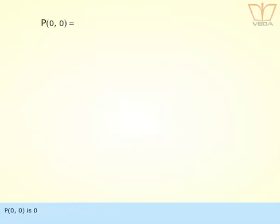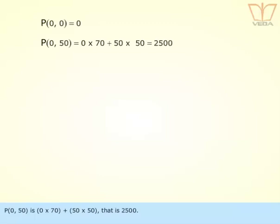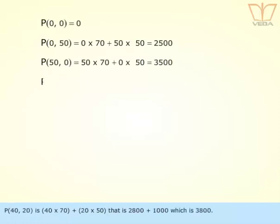P at (0, 0) is 0. P at (0, 50) is 0 times 70 plus 50 times 50, that is 2,500. P at (50, 0) is 50 times 70 plus 0 times 50, that is 3,500. P at (40, 20) is 40 times 70 plus 20 times 50, that is 2,800 plus 1,000, which is 3,800.